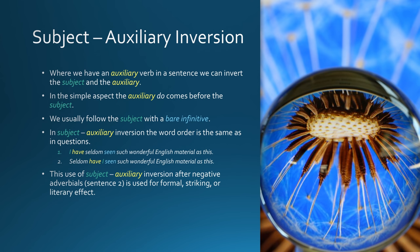Subject-auxiliary inversion. Where we have an auxiliary verb in a sentence, we can invert the subject and the auxiliary. In the simple aspect, the auxiliary 'do' comes before the subject, followed by a bare infinitive. The word order is the same as in questions. For example: 'I have seldom seen such wonderful English material as this' becomes 'Seldom have I seen such wonderful English material as this.' This use after negative adverbials is used for formal, striking, or literary effect.